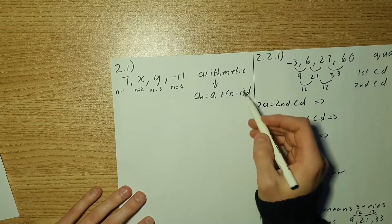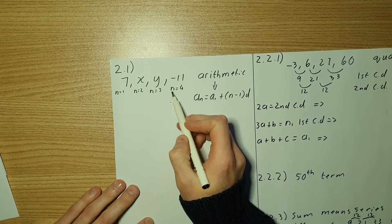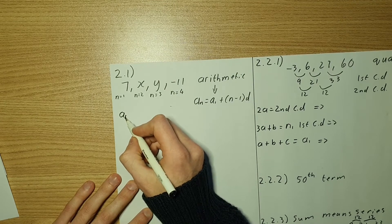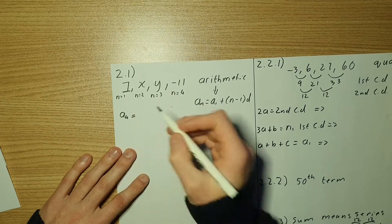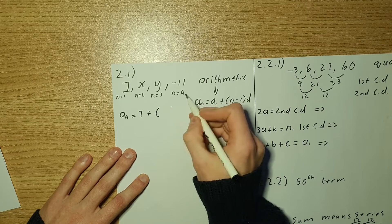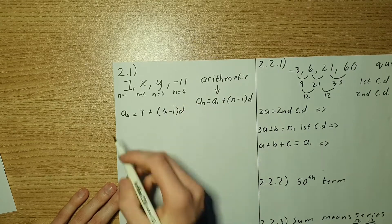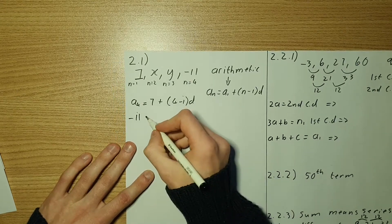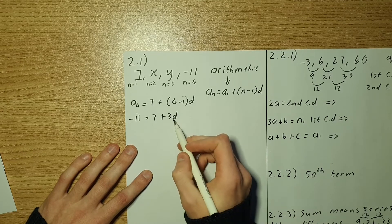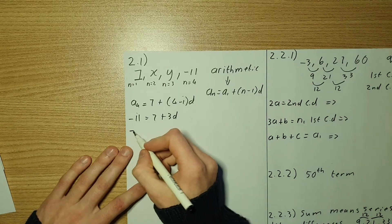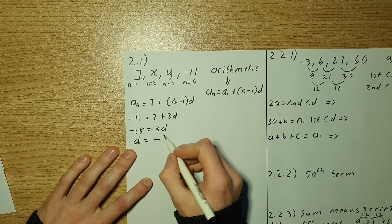The easiest way to find the common difference is to use the fourth term, where n equals 4. So a₄ equals a₁ plus (4 minus 1) times d, which gives us negative 11 equals 7 plus 3d. Solving for d: negative 18 equals 3d, therefore d equals negative 6.